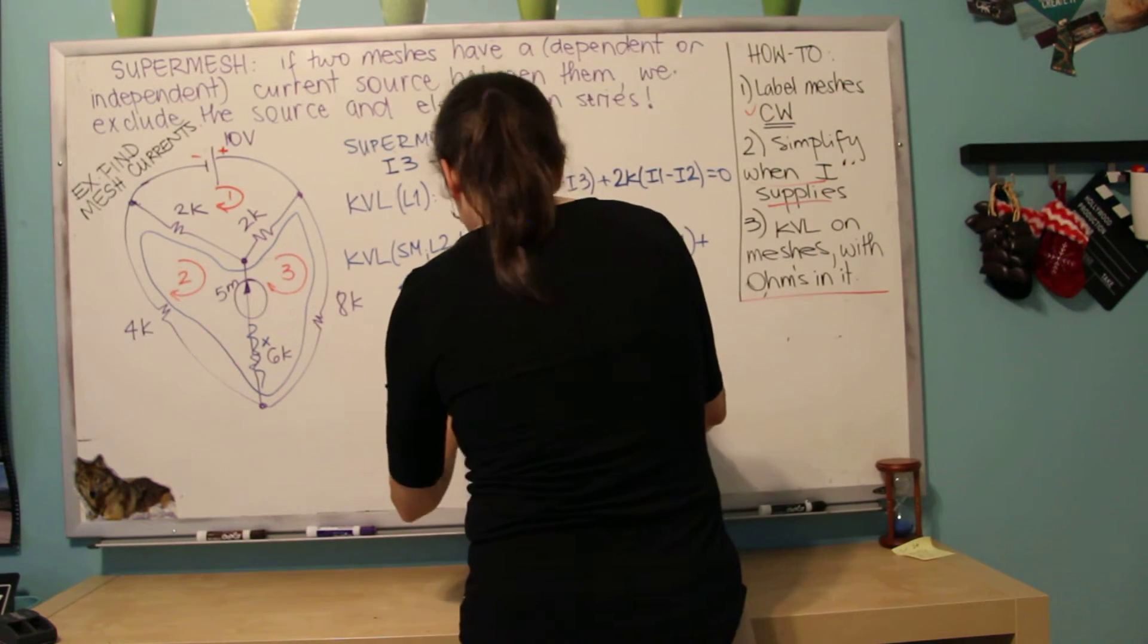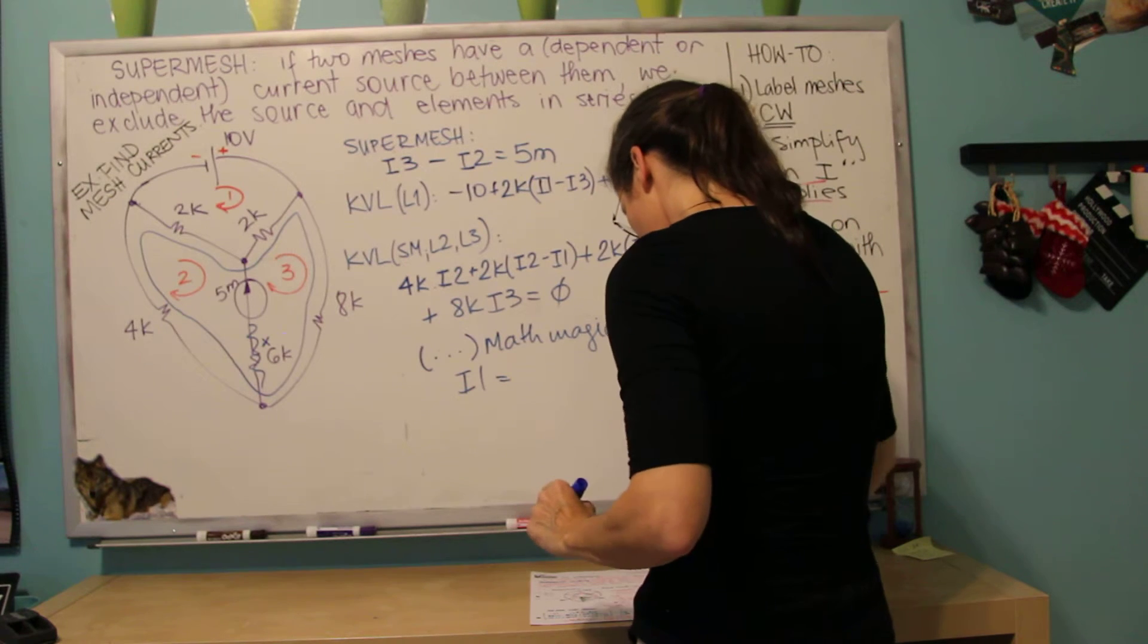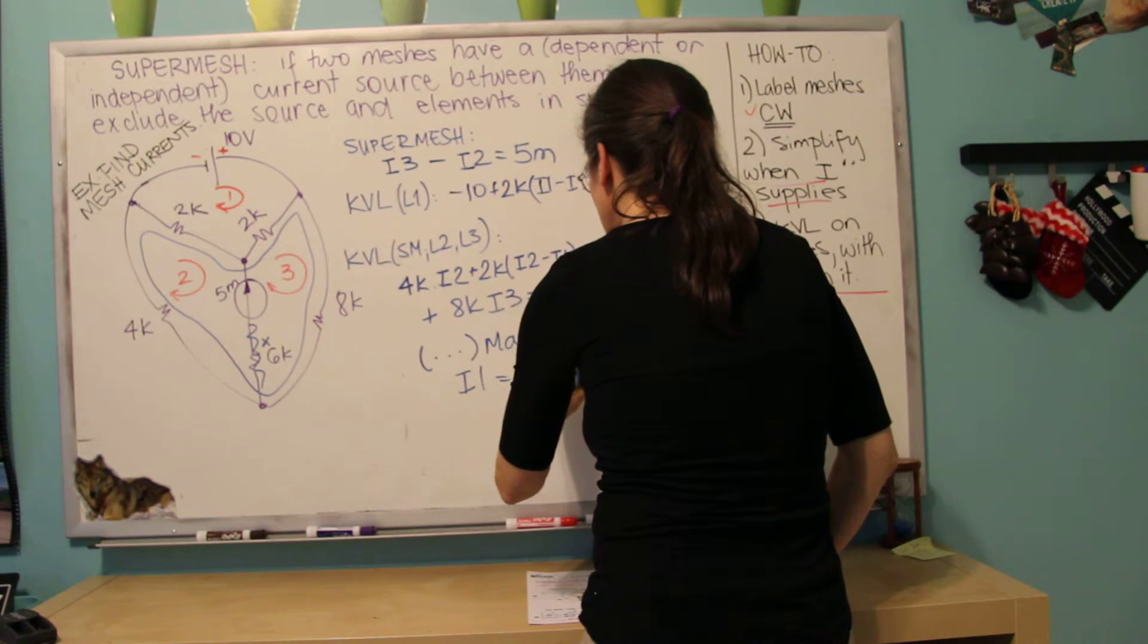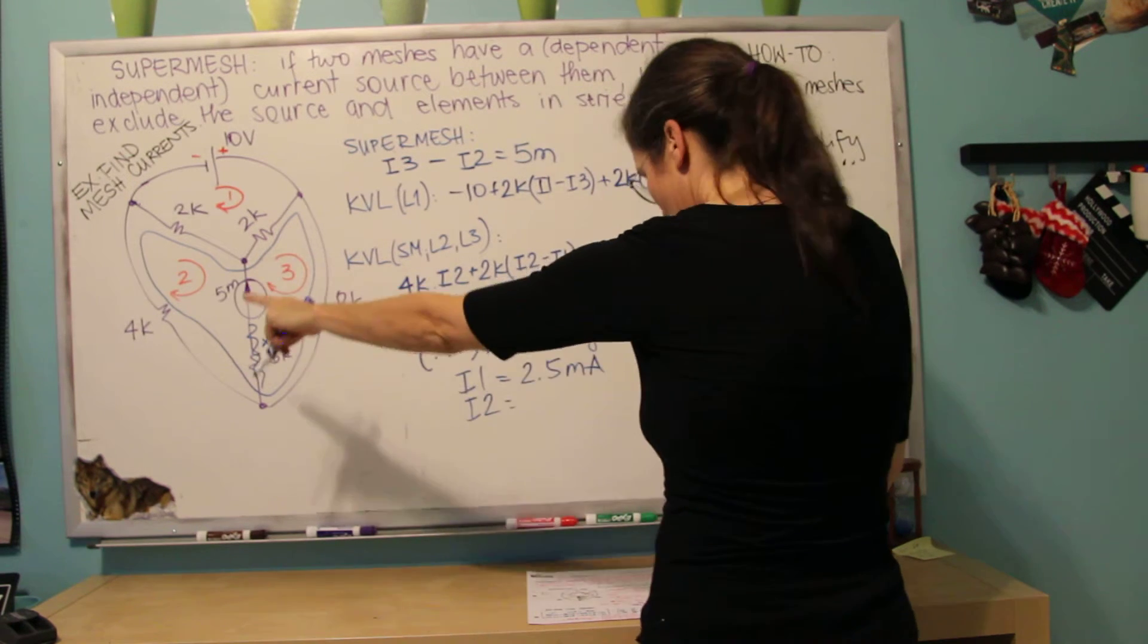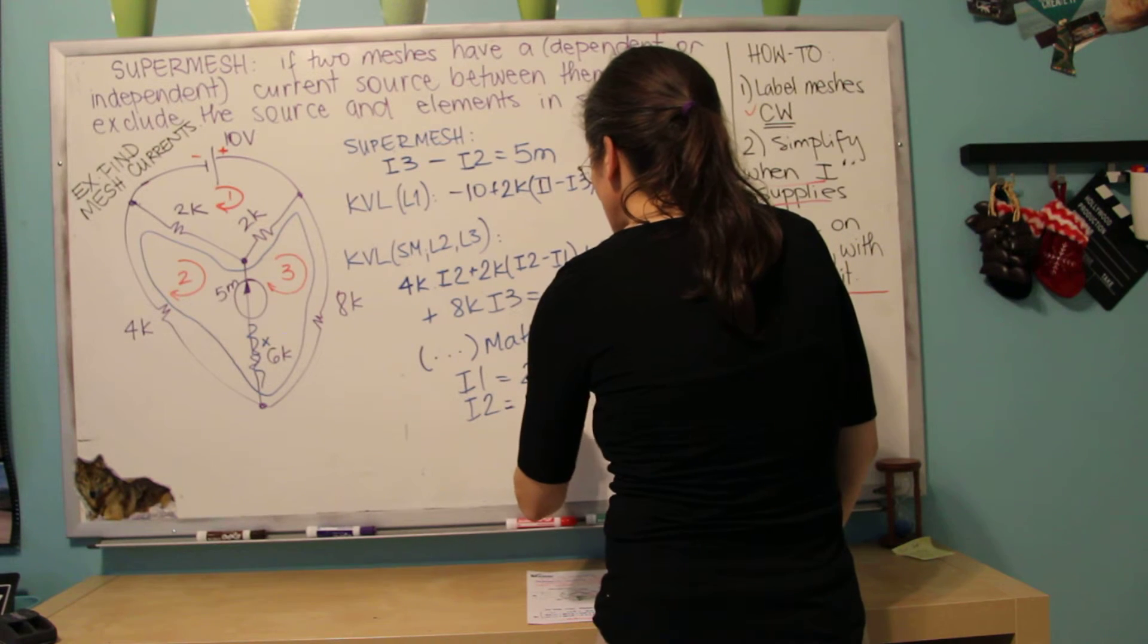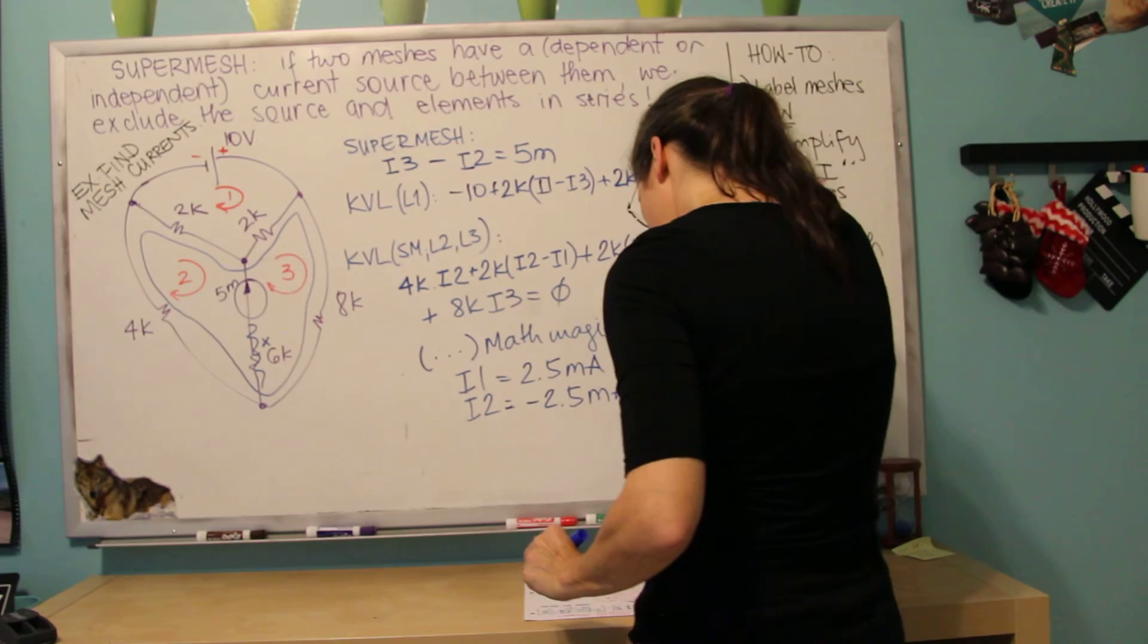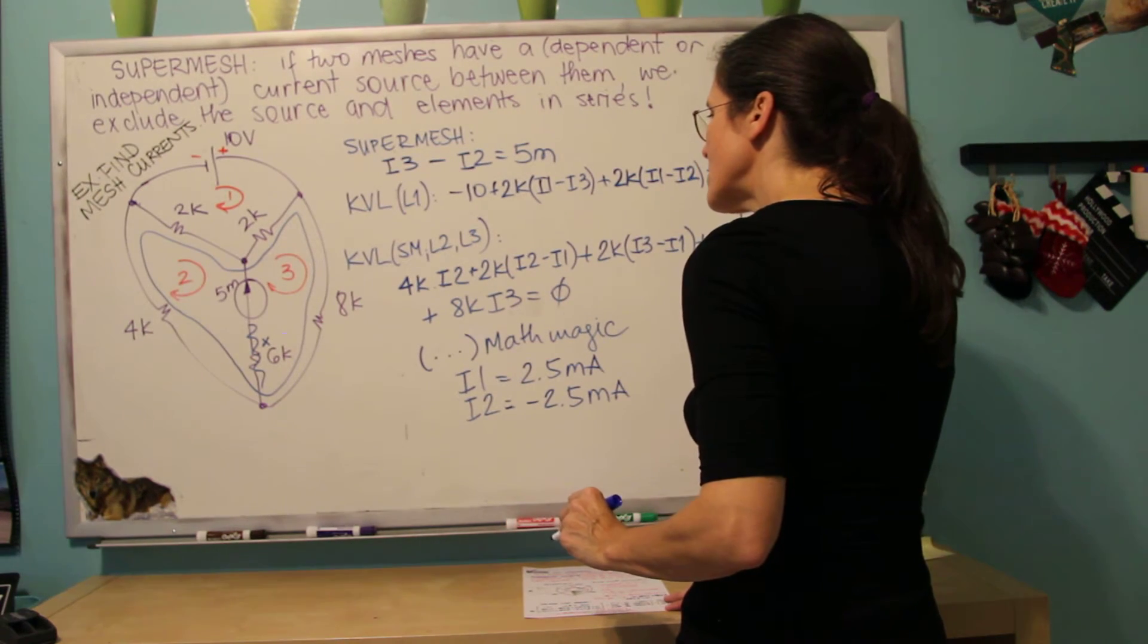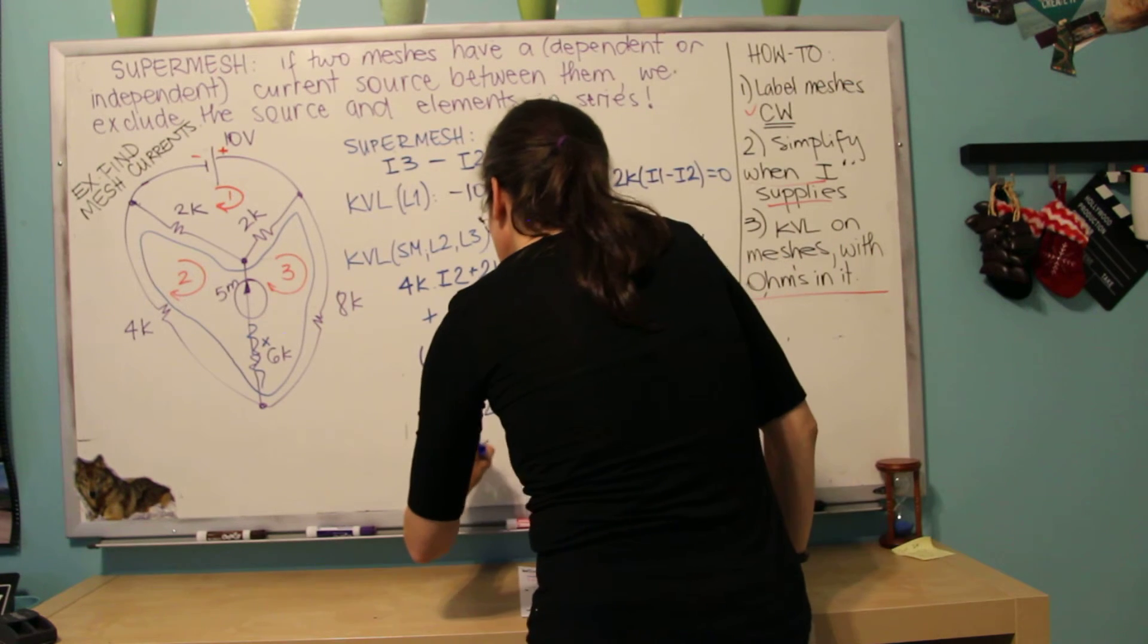And then you find that I1, I hope I have the right. I1 is 2.5 milliamps. I2 is minus 2.5 milli and I3 is 2.5.